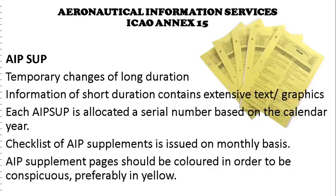AIP Supplements cover temporary changes of long duration — more than three months. Information of short duration but which contains extensive text or graphics is also published in AIP supplements. Each AIP supplement is allocated a consecutive serial number based on the calendar year. A checklist of AIP supplements in force is issued at intervals of not more than one month. AIP supplement pages should be colored, preferably in yellow, to be conspicuous.